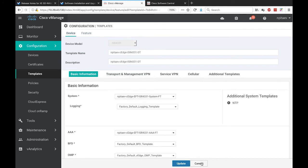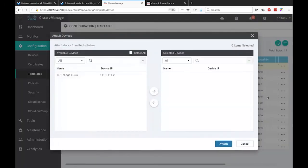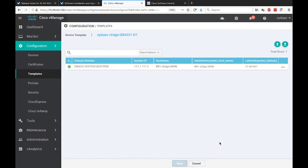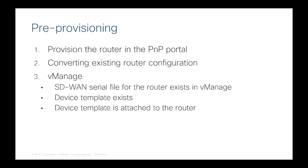The values all look good, so what I want to do next is attach this ISR 4K to this device template. Once your device boots up, because of DHCP it will get an IP address and undergo zero touch provisioning — it will talk to the PnP portal, learn about your vBond, and the vBond will tell it about your vManage and vSmart. When your device contacts vManage, because you have bound this configuration template to the device with the serial number and chassis number, vManage will automatically push this configuration template onto your router and completely configure it end to end.